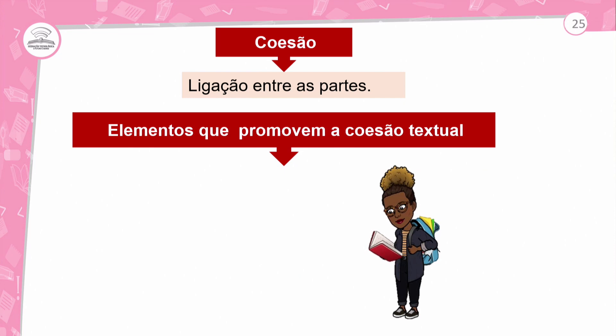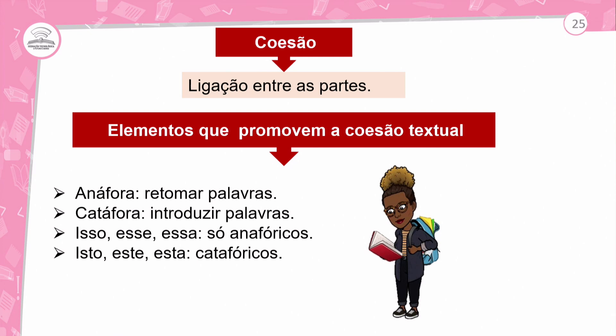Aqui nós temos elementos que promovem a coesão. Temos anáfora, que retoma as palavras, e a catáfora, que introduz a palavra ou as palavras. Isso, esse e essa são anafóricos. Isto, este e esta são catafóricos. Então, para retomar, você vai usar isso, esse e essa. Para introduzir, você vai usar isto, este e esta.